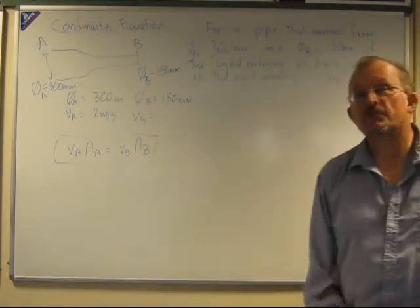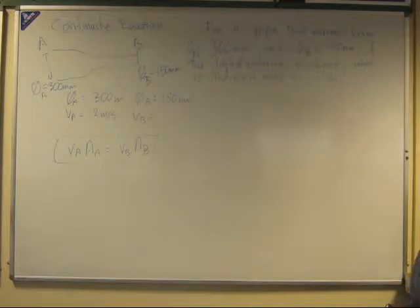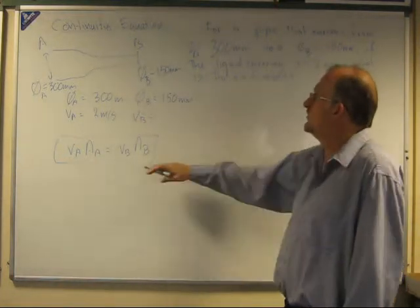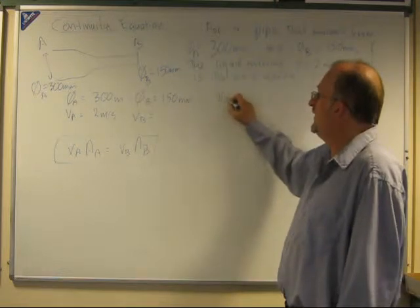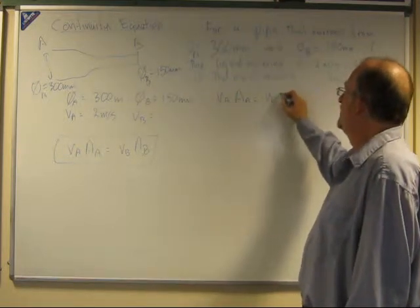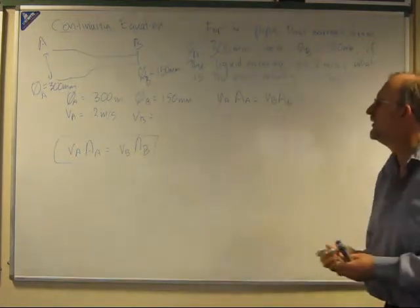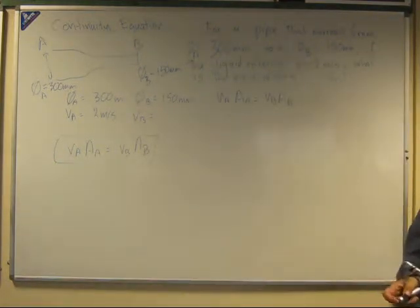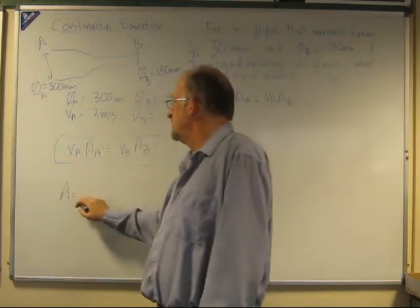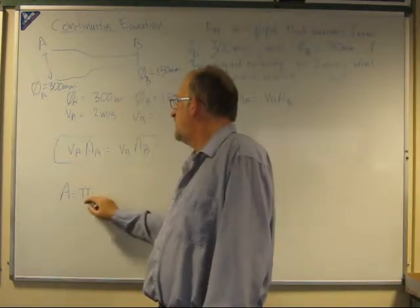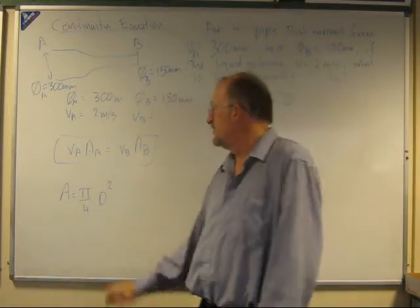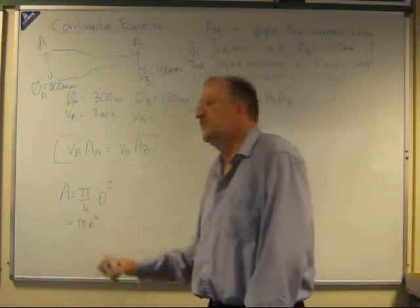So now we have to solve the problem. Let's go and actually work on it. So we'll start with our continuity equation. VA times area of A equals VB times area of B. We remember area for a circle is pi over 4 times D squared, which is exactly the same as pi R squared.